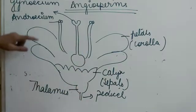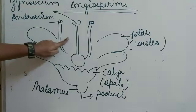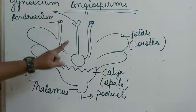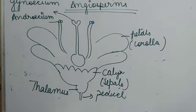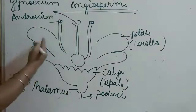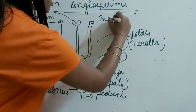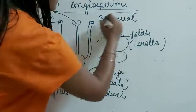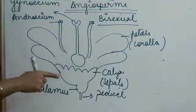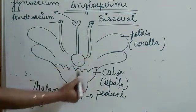On top of the flower, the gynoecium is the female part and the androecium is the male part. When a flower has both male and female parts, we call it a bisexual flower. Bisexual means both sexes — both gender — are present. The female part and the male part are both there in the same flower.